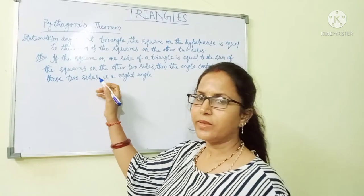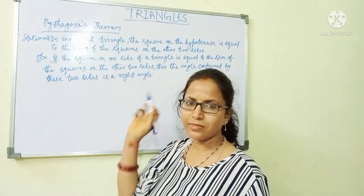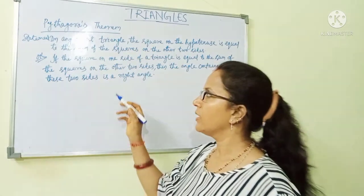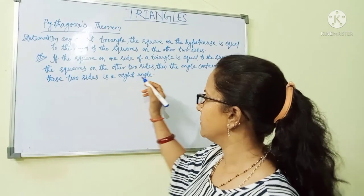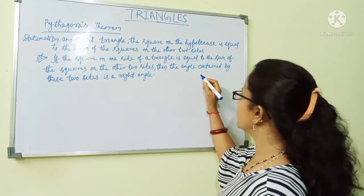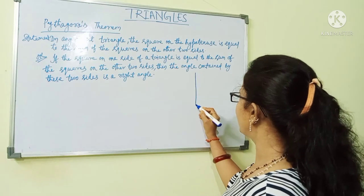Now, we will discuss the Pythagoras theorem. In Pythagoras theorem, it is referred to a right-angled triangle.